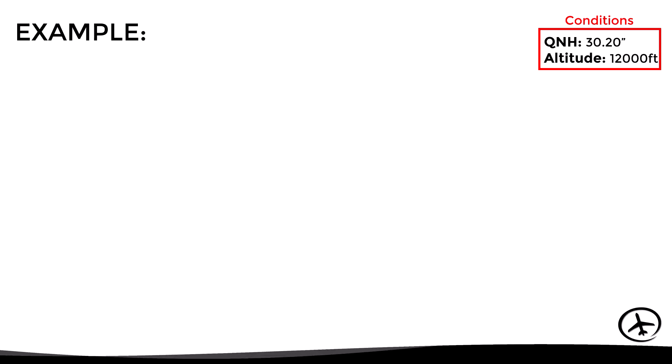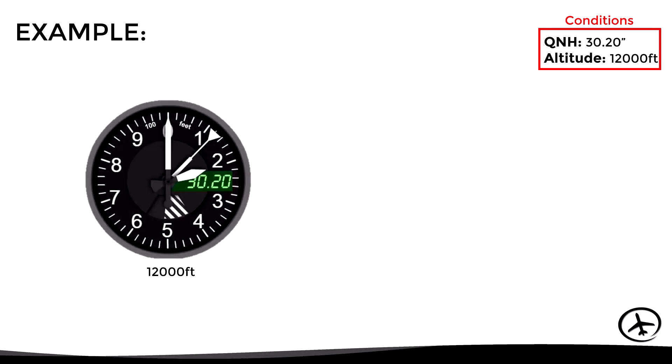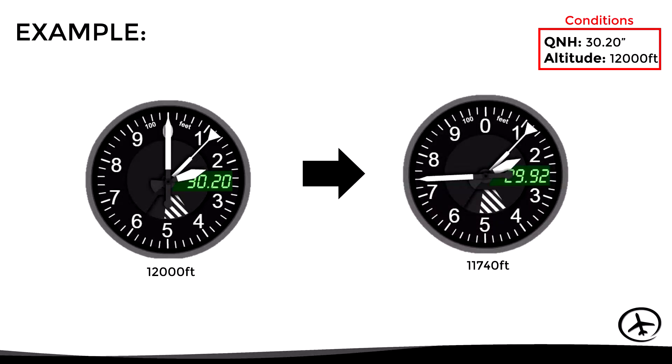Now let's see how to determine the pressure altitude using the altimeter of the aircraft, using the same conditions. Our altimeter is adjusted with the local QNH of 30.20, indicating an altitude of 12,000 feet. To determine the pressure altitude, all we have to do is adjust 29.92 in the altimeter and read the altitude indication — in this case 11,740 feet.